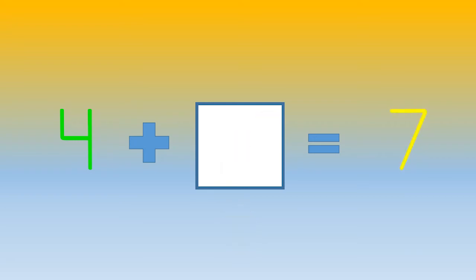Another way you could do it is by using tally marks. Same thing. 4, 5, 6, 7. How many tally marks? 3 again. 4 plus 3 equals 7.